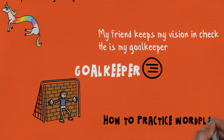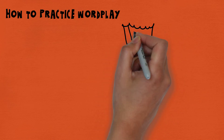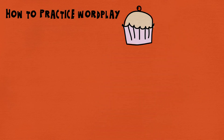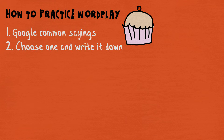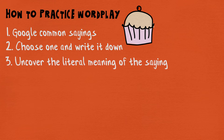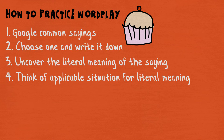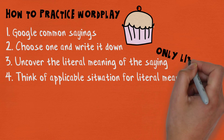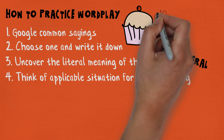How to practice wordplay. This technique is only hard in the beginning — once you know how to imagine creative context, then it's a piece of cake. The best way to practice it is: one, google common sayings; two, choose one and write it down; three, uncover the literal meaning of the saying; four, think of a situation where that literal meaning could be used. Imagine if the common saying didn't have a figurative meaning — in which situation would you use it?